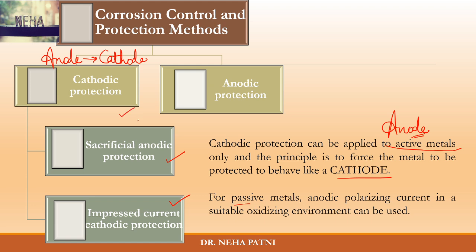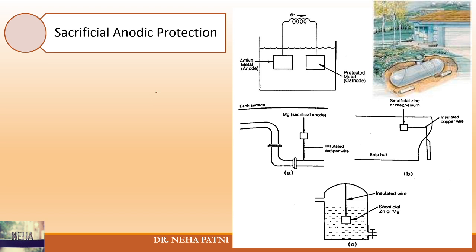In cathodic protection, we'll first discuss sacrificial anodic protection. You have to make your metal become cathode. For example, you have a pipe here, or a ship hull, or a water tank — whatever you want to prevent — this is your active metal acting as anode.